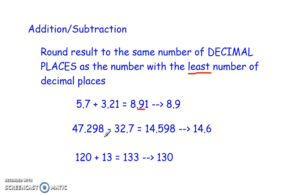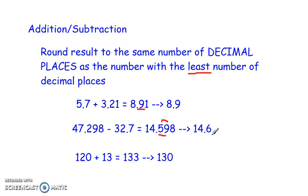If I have 47.298 minus 32.7, my calculator tells me 14.598. The first number has three decimal places. The second one only has one decimal place. So my final answer is going to be rounded to the first decimal place. I look one place beyond — that 5.59 — the 9 is going to round that 5 up to a 6. So my answer would be 14.6.